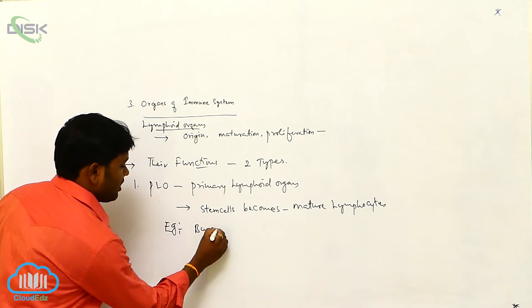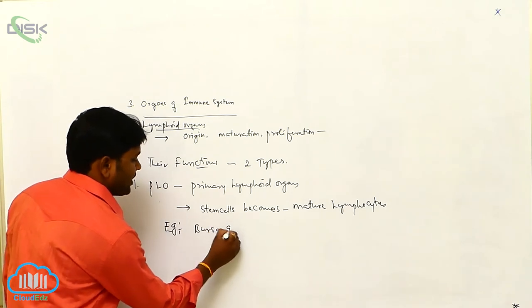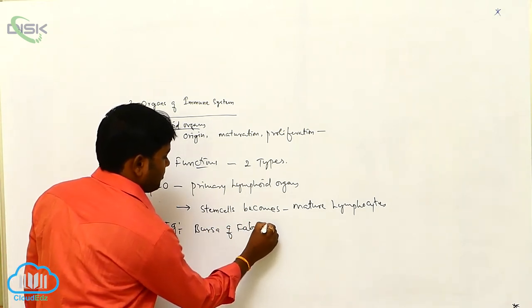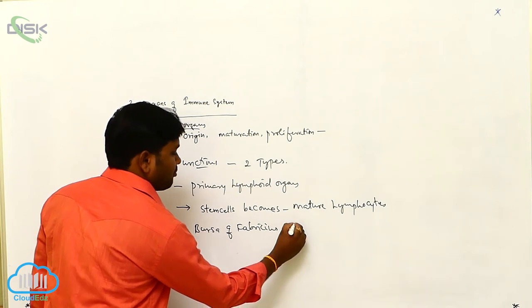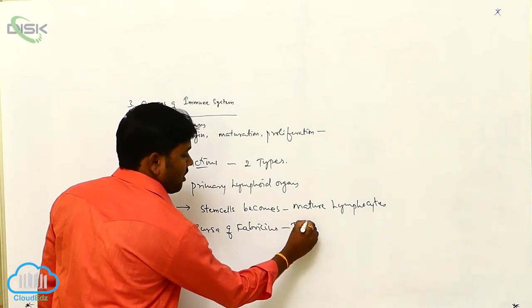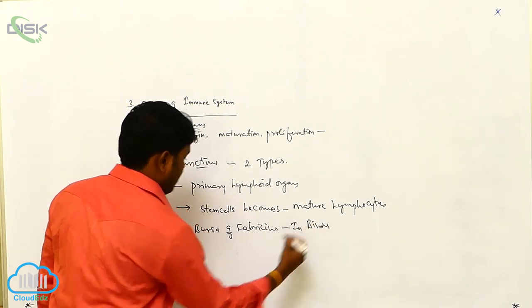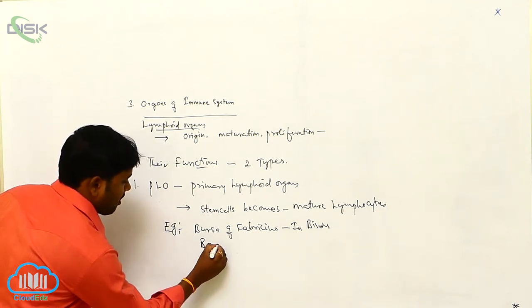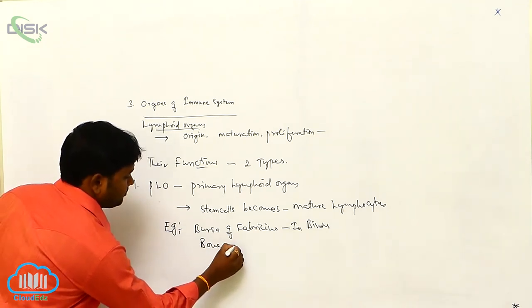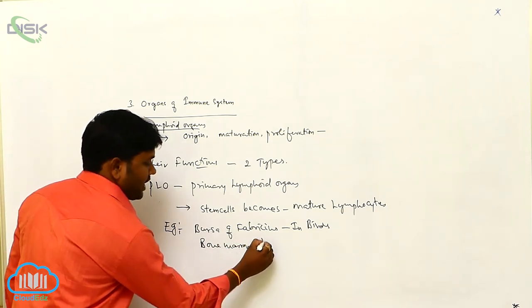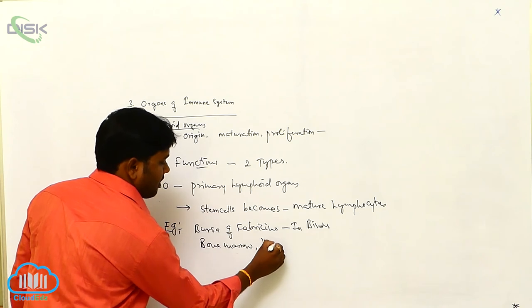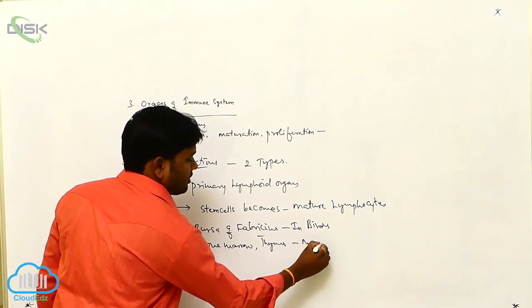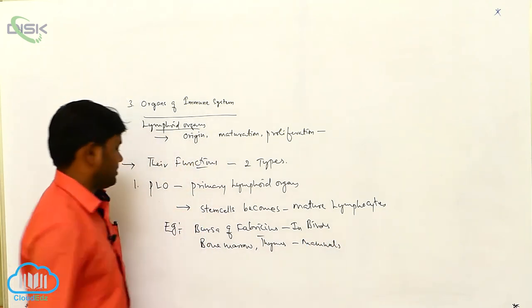Examples of primary lymphoid organs include the bursa of Fabricius in birds, bone marrow, and the thymus in mammals.